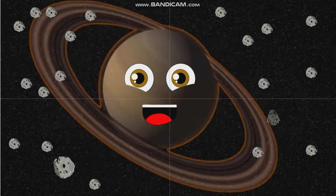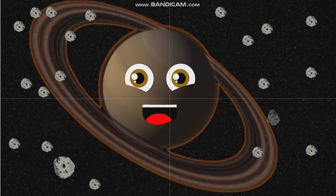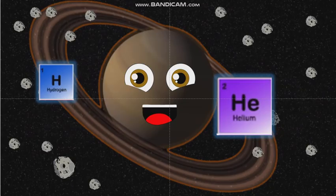My name's Saturn, check out my pretty rings. These rings are a few of my favorite things. I'm a giant made of hydrogen and helium. And please stop hitting me with things.